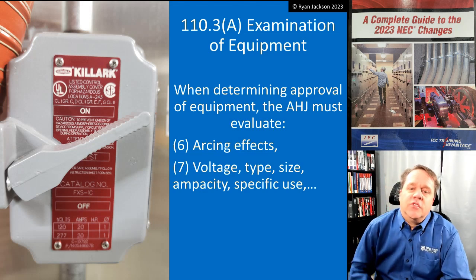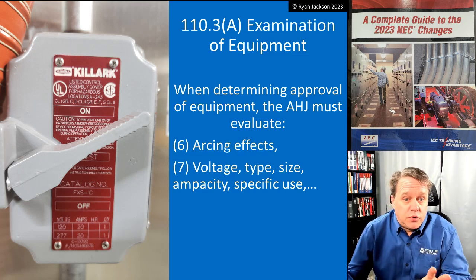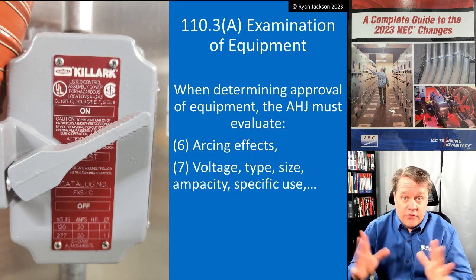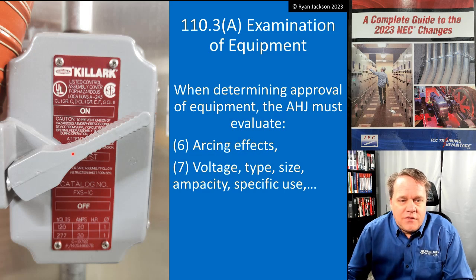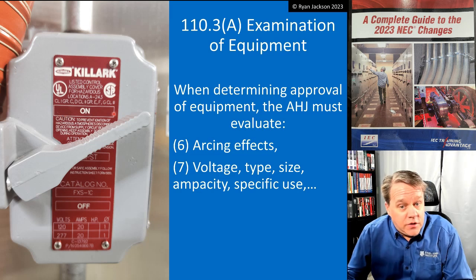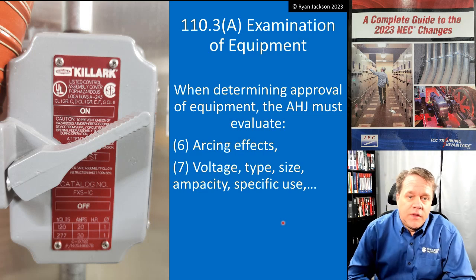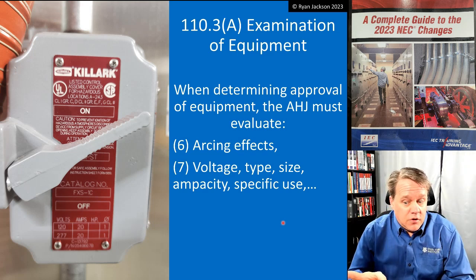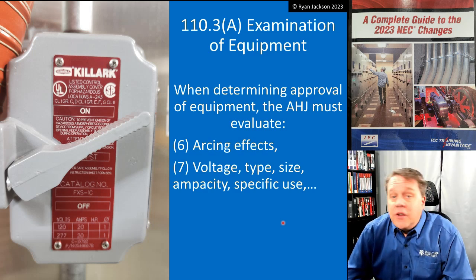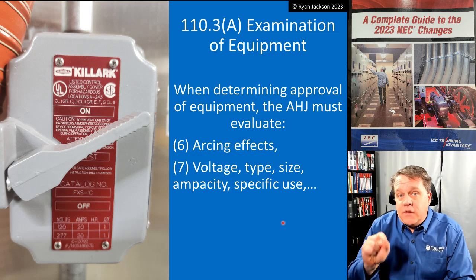We also have to look at arcing effects and consider voltage type, size, ampacity, and specific use. Here's an explosion-proof and dust-ignition-proof switch enclosure. It says it's suitable in Class I Groups C and D, Class II Groups E, F, and G, and Class III. Class I contains Groups A, B, C, and D — but this is only rated for Groups C and D. What if you're installing in an area hazardous due to acetylene or hydrogen — Group A or Group B? Can't use it. We need to evaluate specific use and understand the product's limitations.